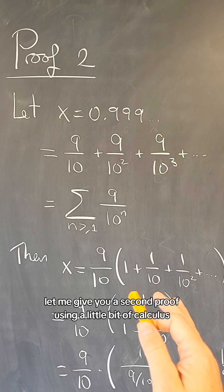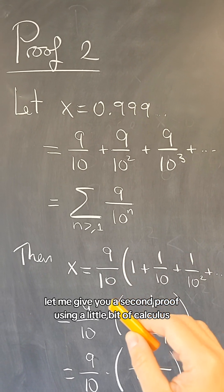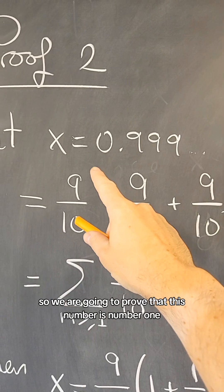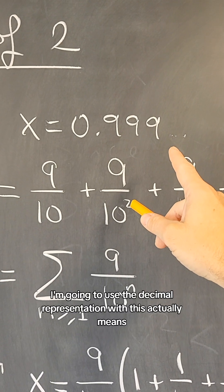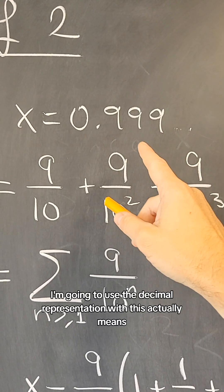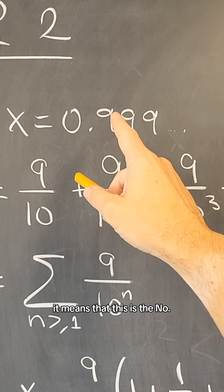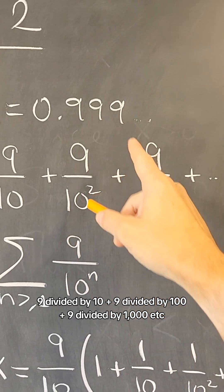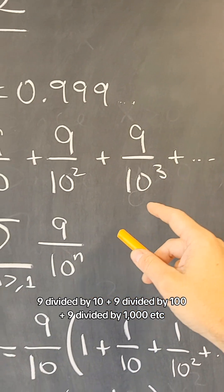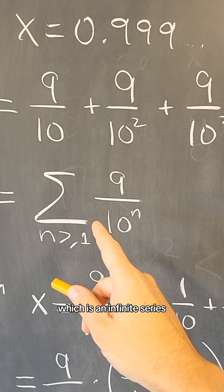Let me give you a second proof using a little bit of calculus. So we are going to prove that this number is 1, and to do so, I'm going to use the decimal representation. What this actually means is that this is 9 divided by 10 plus 9 divided by 100 plus 9 divided by 1000, etc., which is an infinite series.